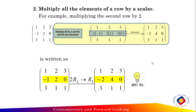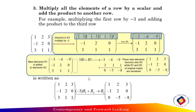The operation is written as two times row two to get new row two. The elements in row one and row three remain unchanged. The third method of elementary row operation is to multiply all the elements of a row by a scalar and add the product to another row.